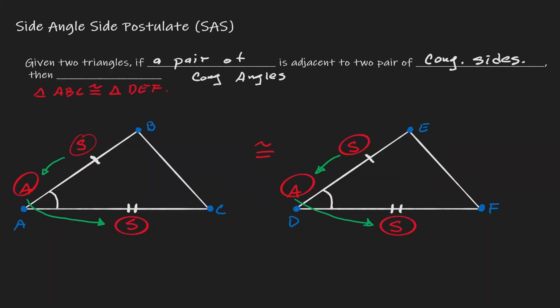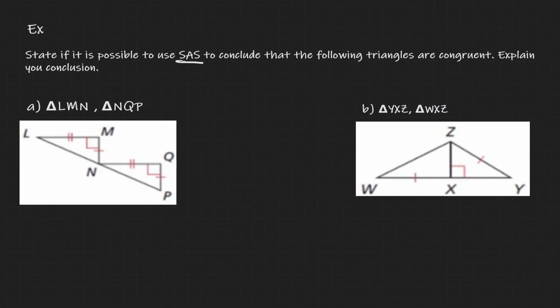Now let's put this idea into practice with an example. What we want to do is state if it's possible to use the side-angle-side postulate to conclude that the following triangles are congruent. Looking at example A, let's gather information from the diagram. MN has one mark and QP has one mark, so those two sides are congruent. Angle M is 90 degrees and angle Q is 90 degrees, so they are congruent. LM has two marks and NQ has two marks, so they are congruent. We have two congruent sides and one congruent angle.